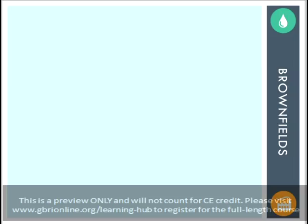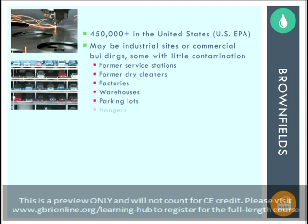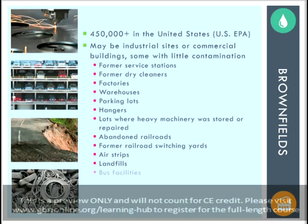Brownfields comprise a considerable amount of buildable land in the United States. There are over 450,000 sites in the United States currently designated as brownfields, according to the Environmental Protection Agency. While these sites do pose unique challenges to developers, they also represent a large potential for revitalizing underused areas and can provide significant profits for the owners. The traditional association with a brownfield is an abandoned factory or other industrial site, but there are many types of sites that may be considered brownfields, each with varying levels and types of contamination.